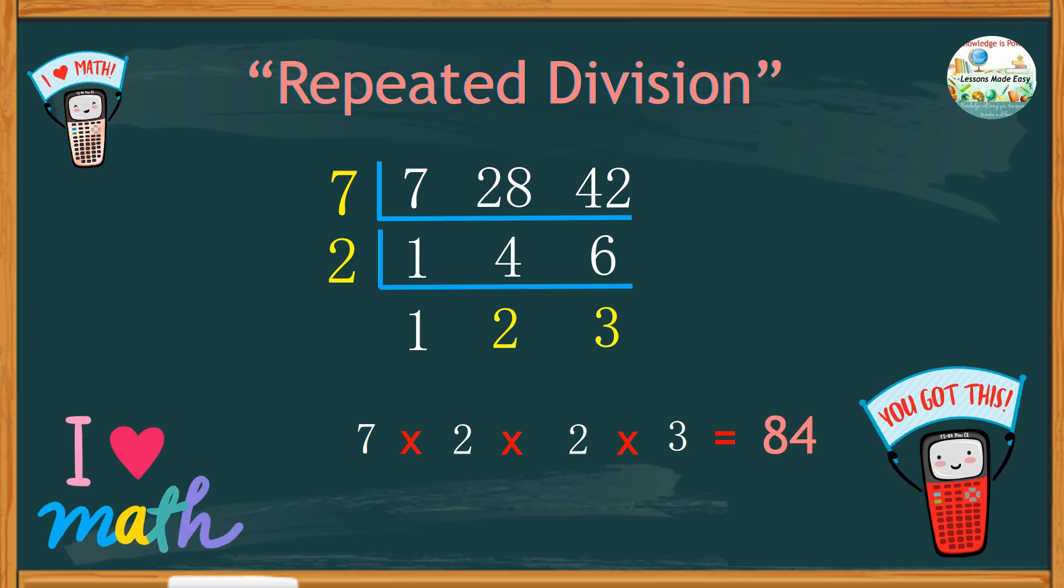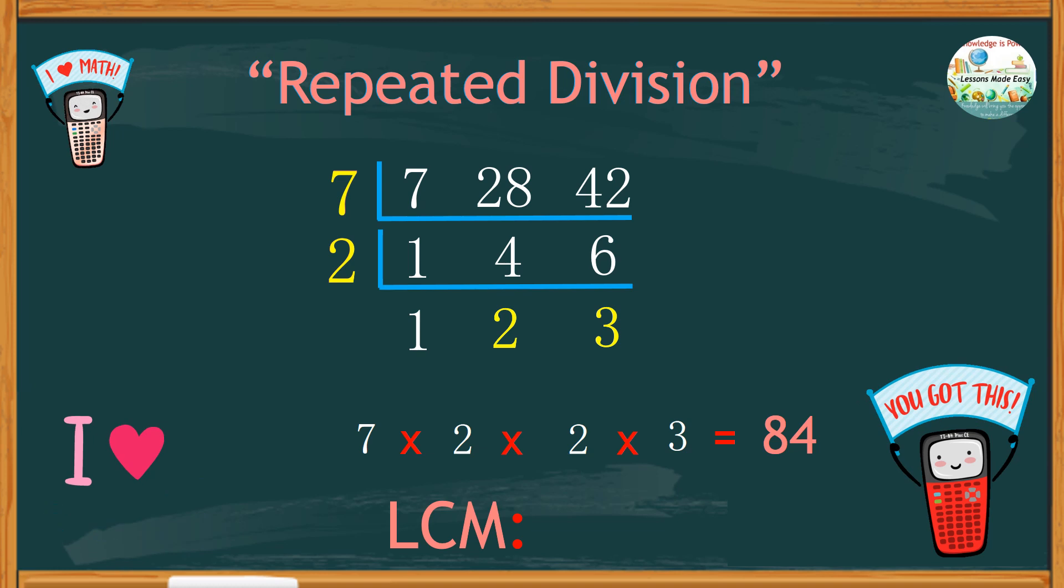This means that the least common multiple of seven, twenty-eight, and forty-two is eighty-four. And there you have it, just like that, and we're done. So, thanks for staying with me until the end of this video, and without a doubt, I believe you now have a better understanding about the least common multiple.